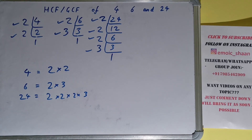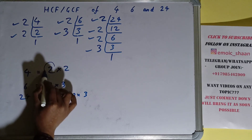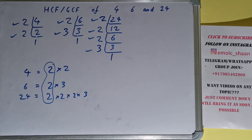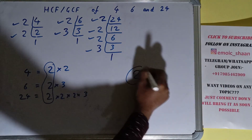Now circle out the common prime factors among them. We only have one prime factor in common, that is 2. There is nothing extra in common among all three. So the answer will be 2.